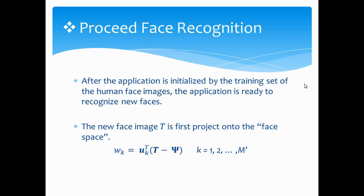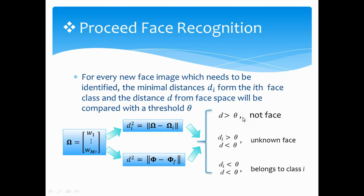After the application is initialized by the training set, the application is ready to recognize new faces. Let T be the new face image which needs to be recognized. This operation will project the original face image onto the face space defined by the M-prime eigenvectors. The weights form a vector omega that shows the contribution of each of the M-prime eigenvectors in describing the new face image.